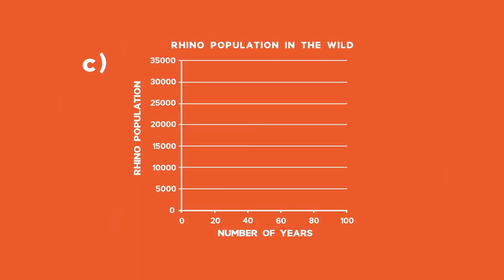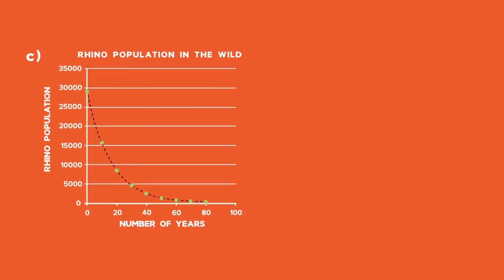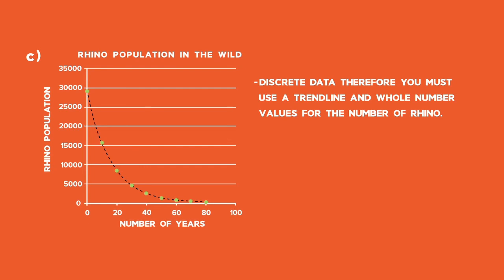For part C, we need to draw the graph first before commenting on the trend. Using the current population at time 0 as 29,000 and the two values calculated in parts A and B, we can sketch the decreasing exponential trend line that represents the decline in rhino population numbers. Since rhino populations can only be measured as discrete data, you must use a trend line and whole number values. The graph is a decreasing exponential function.